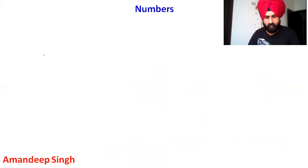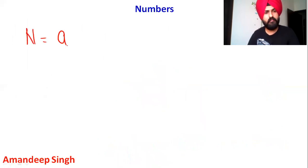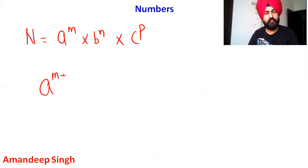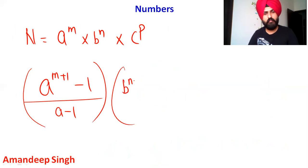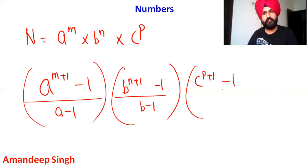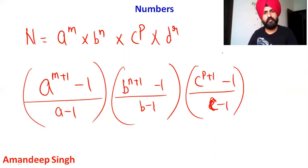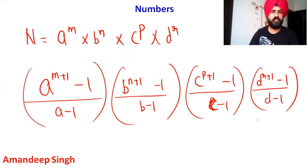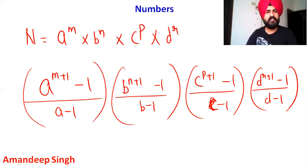To summarize: the general formula for sum of all factors of N = a^m × b^n × c^p is [(a^(m+1) − 1)/(a − 1)] × [(b^(n+1) − 1)/(b − 1)] × [(c^(p+1) − 1)/(c − 1)]. For special conditions like even, odd, or divisibility, simply adjust which powers are included in each bracket before multiplying. Thank you.